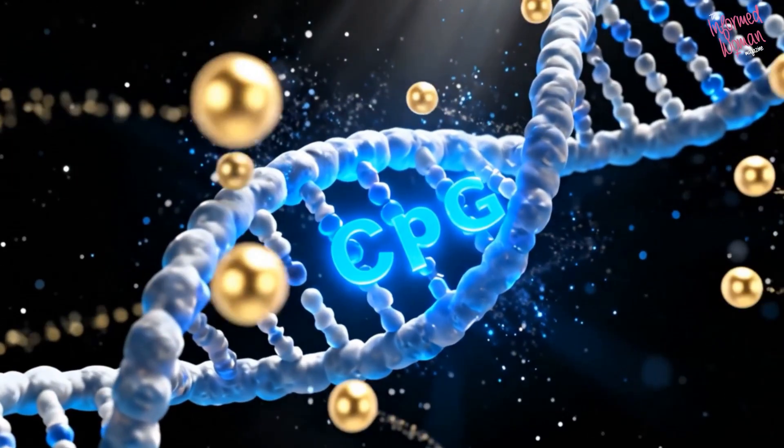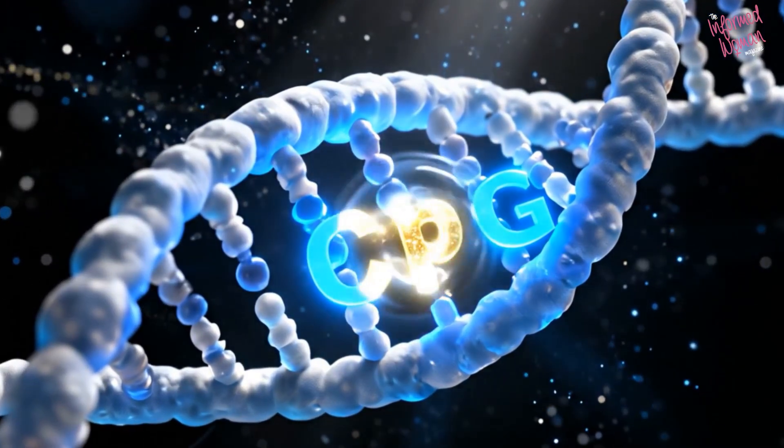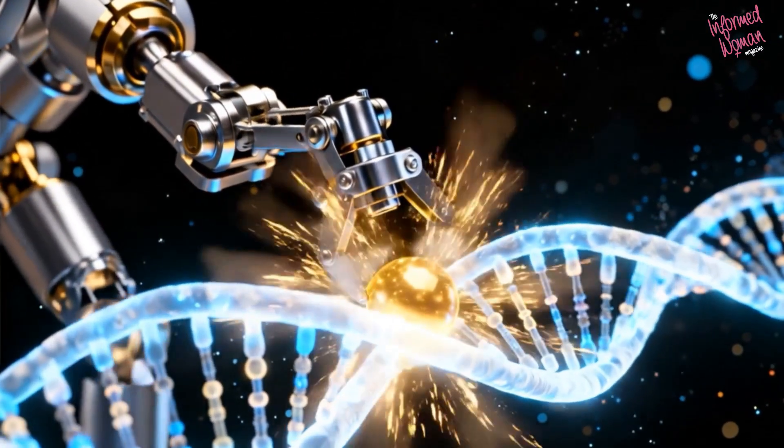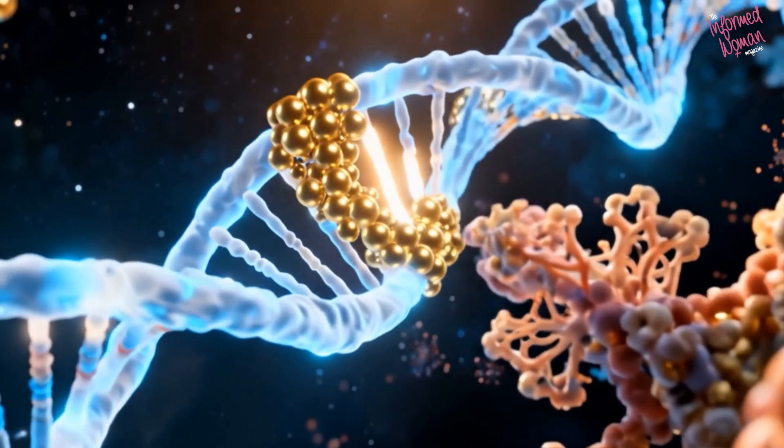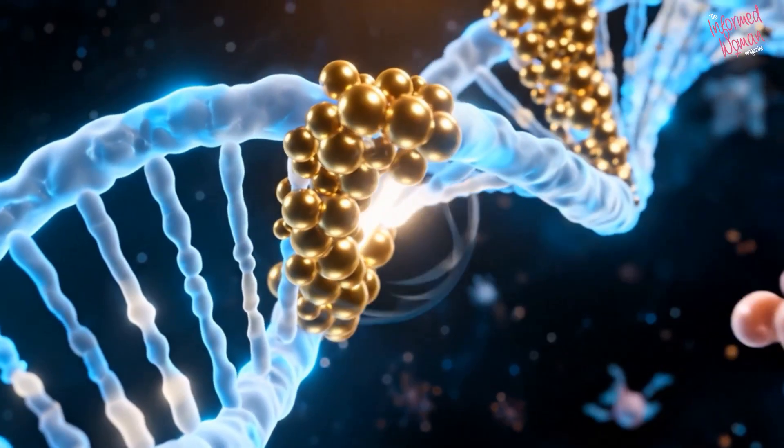DNA methylation adds a small chemical tag, a methyl group, to cytosine bases in DNA. This process is managed by enzymes called DNA methyltransferases. When methyl groups cluster near promoters, they block transcription and make DNA coil tighter, reducing activity.